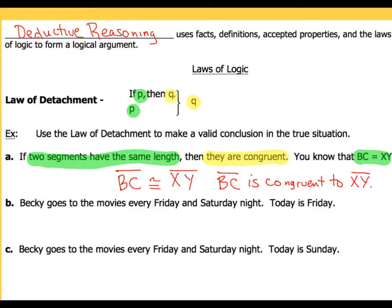On to example B. This time, we've got Becky going to the movies every Friday and Saturday night, and we're told today is Friday. This one is a little bit more challenging because it doesn't have the word 'if' or 'then' in it, so it's a little hard to figure out which piece is the conclusion and which is the hypothesis. Take a look at it from the perspective of which thing has to happen in order for something else to happen.